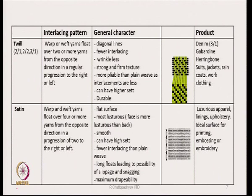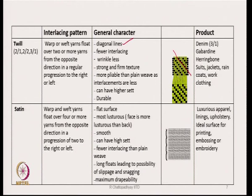Twill weave: warp or weft yarns float over 2 or more yarns from the opposite direction in a regular progression to the right or left — we have 2×1 twill, 2×2 twill, 3×1 twill, creating diagonal lines. Fewer interlacement patterns, wrinkles less, strong and firm structure, more pliable, can have higher set, and is durable. Typical products are denim, gabardine, herringbone, and suits.